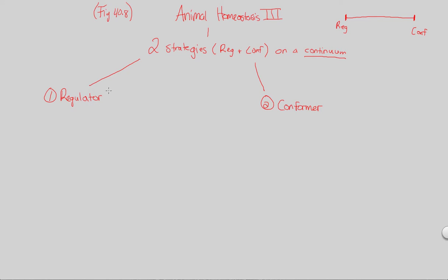A regulator is shown in figure 40.7. It's a really cool graph showing a temperature regulator. In that figure, the otter is the temperature regulator. When we talk about a regulator, the basic definition is that we're going to use internal mechanisms. That makes sense - we're talking about homeostasis, it's often internal. Use internal mechanisms to control - that's the key word - to control the internal environment.